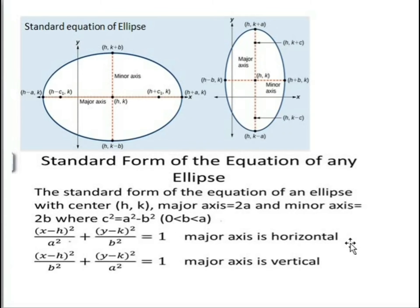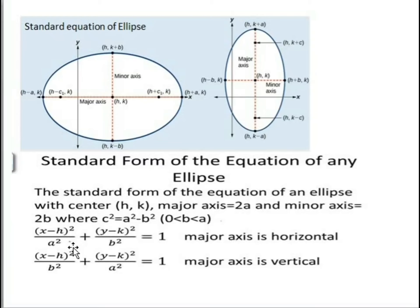When the major axis is horizontal and the center is (0, 0), the equation is x² / a² + y² / b² = 1. When the major axis is vertical, the equation changes to x² / b² + y² / a² = 1. So when the ellipse is horizontal the equation is x² / a² + y² / b² = 1, and when the major axis is along the y-axis the equation is x² / b² + y² / a² = 1.